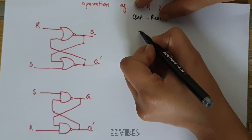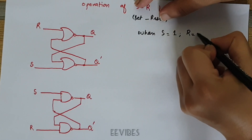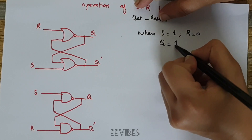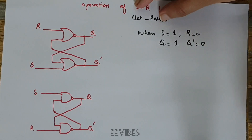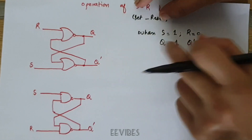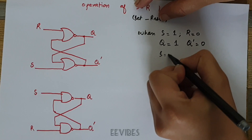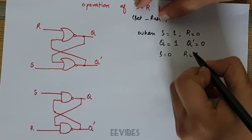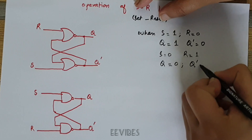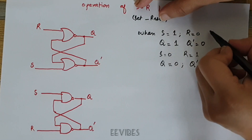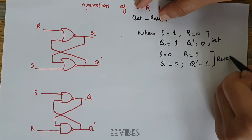By the set state we mean when S is equal to 1 and R is equal to 0, we will have output Q in the set state and Q-bar in the zero state, because both outputs are the complement of each other. Similarly, when you make S equal to 0 and R equal to 1, the SR latch will be in the reset state, making output Q equal to 0 and Q-bar equal to 1.